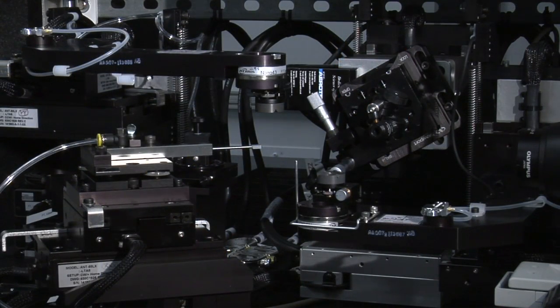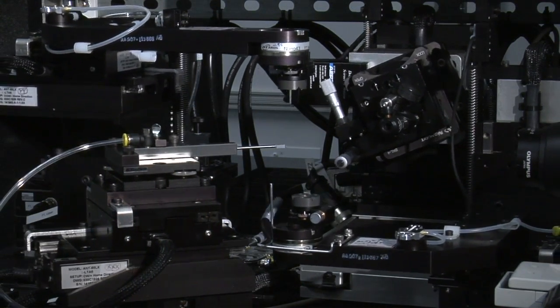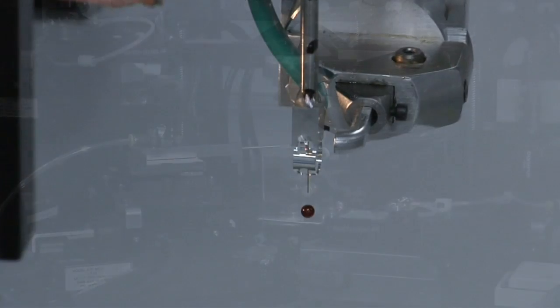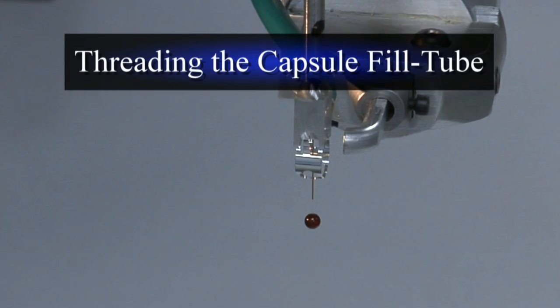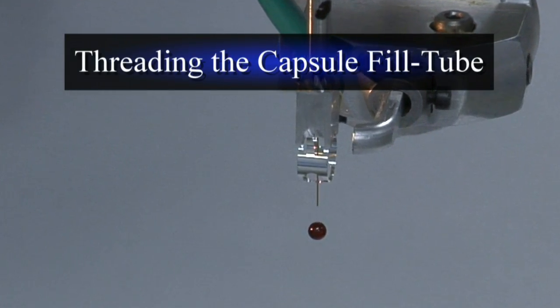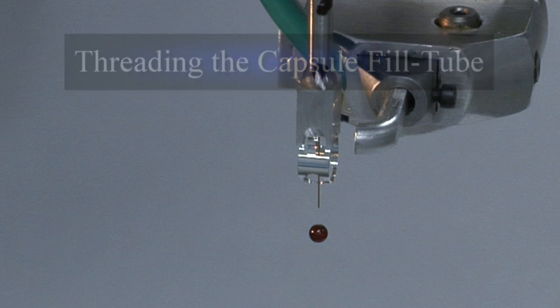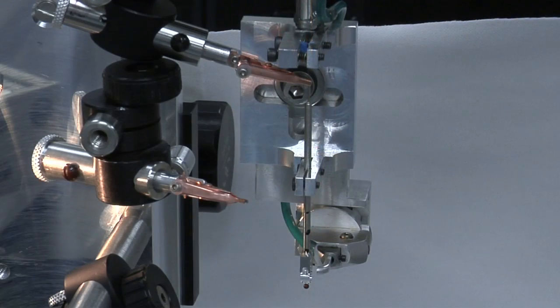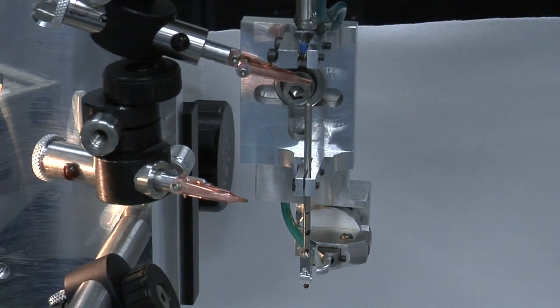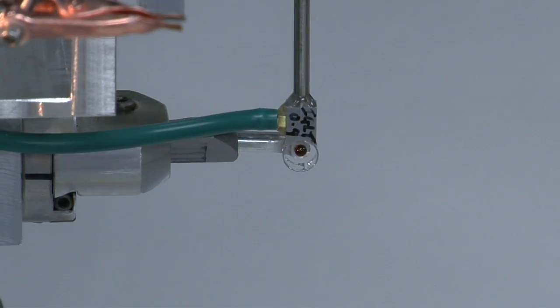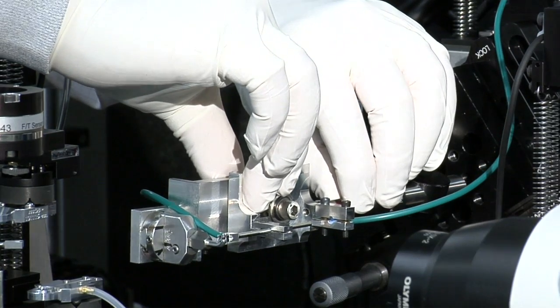Before starting to assemble a target the manipulator system is turned on. The two millimeter diameter capsule and its glass fill tube which tapers to one-tenth the thickness of a human hair are fitted into the central portion of the target using a special fixture and transfer tooling. The transfer tooling is then loaded onto the machine.